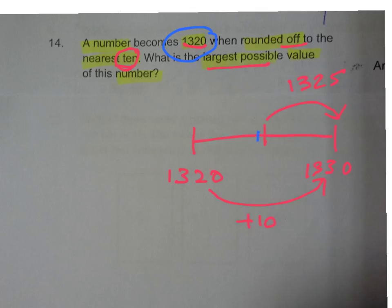So we go one number smaller, which gives us 1324, and round off.